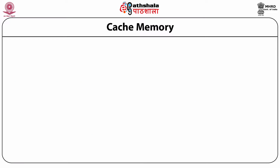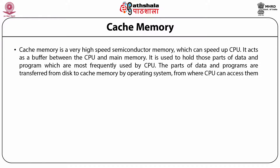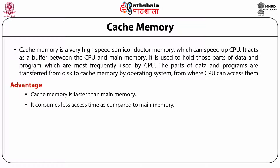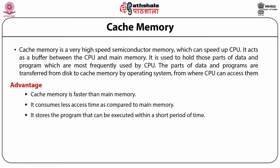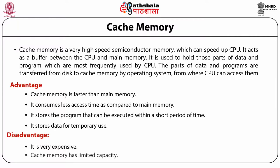Cache memory is a high-speed semiconductor memory which can speed up the CPU. It acts as a buffer between CPU and main memory and holds those parts of data and programs most frequently used by the CPU. These parts are transferred from disk to cache memory by the operating system, from where the CPU can access them. The advantage is that it is faster than main memory and consumes less access time. The disadvantage is that it is very expensive and has limited capacity.